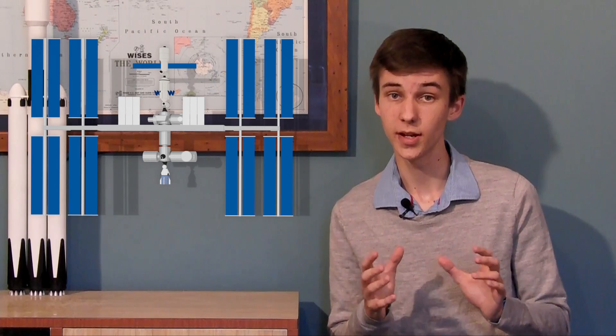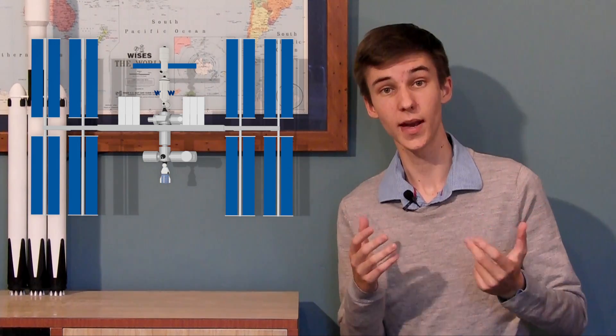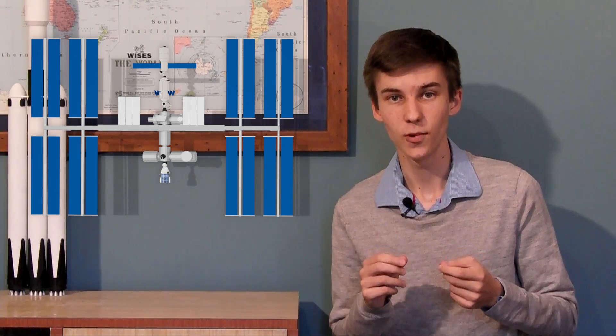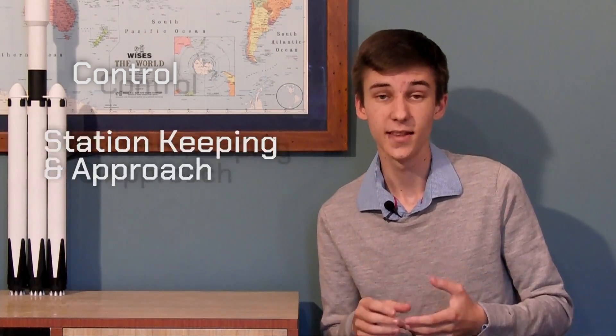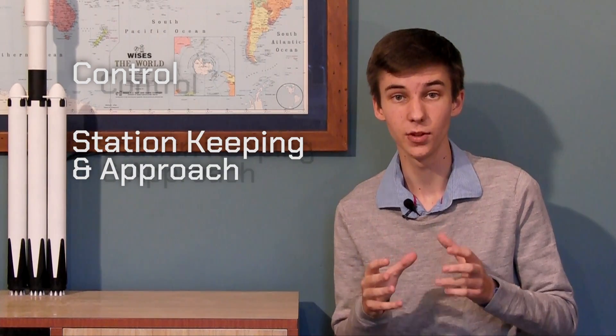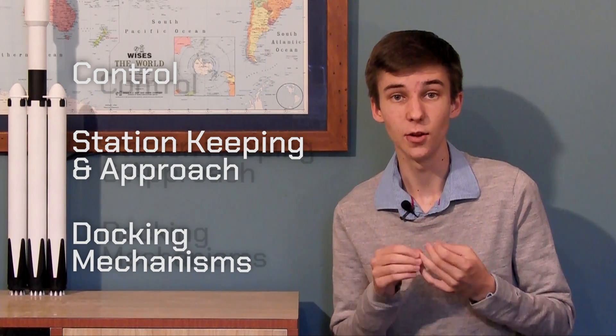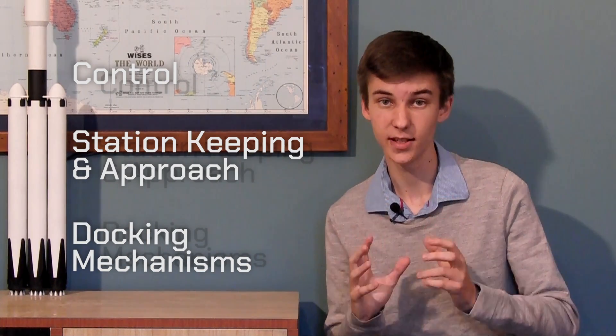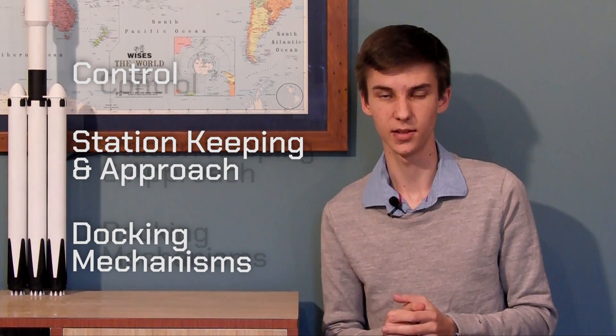Docking is an integral part of modern space flight. It is the physical connection of two spacecraft in space, and to do this we are going to look at three main parts. First is how we actually get that flying control over the position and rotation of our spacecraft. The next is something called station keeping and then that approach for the docking. And then finally, the docking itself, actually physically connecting the two spacecraft together.